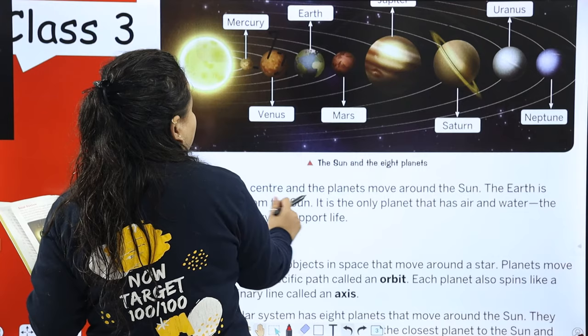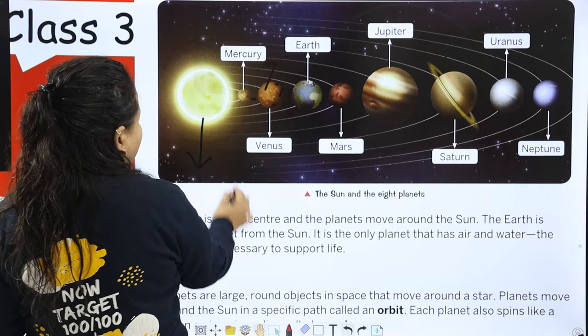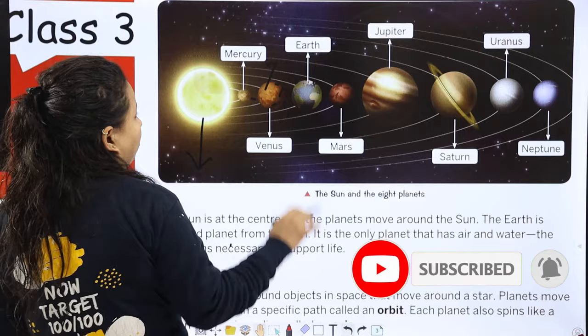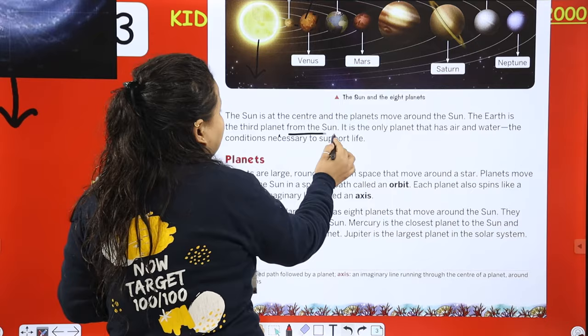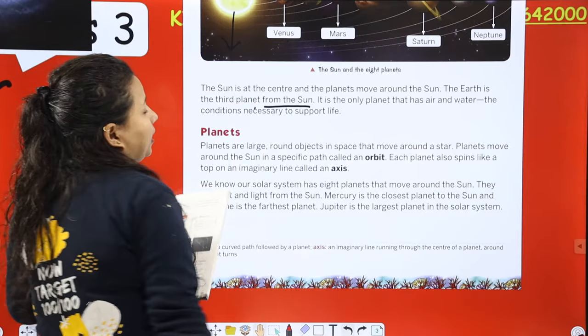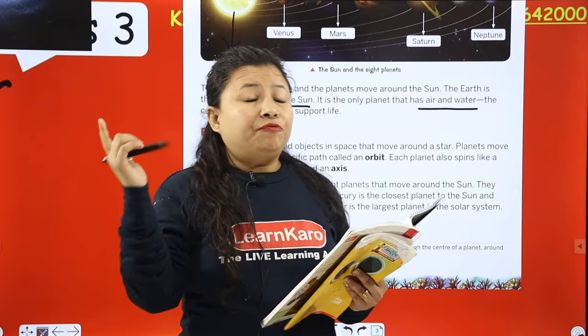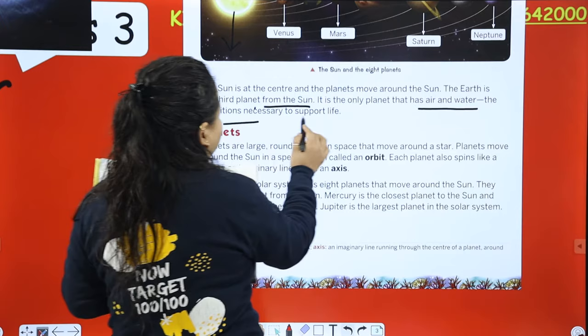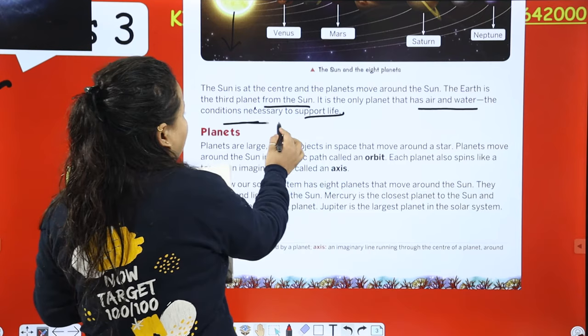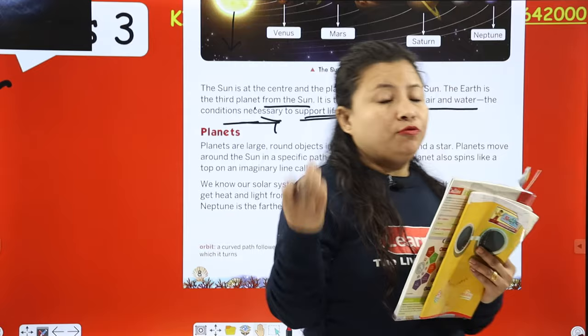The sun is the center, and the planets move around the sun. The Earth, which is the third planet from the sun, is the only planet that has air and water. Therefore there is life on Earth - all the conditions necessary to support life are present on Earth: food, air and water.